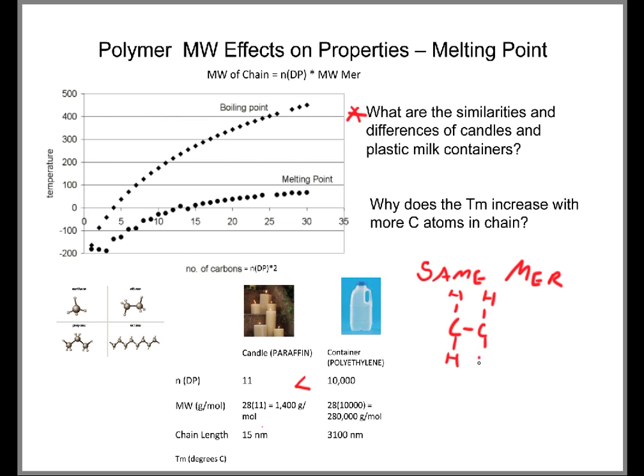They have the same mer. Their degree of polymerization is different. Also notice that their molecular weight for the entire chains is less for the candle than for the container. The chain length for the candle made of paraffin is less than the container made of polyethylene. Looking at the trends in this table, we can predict that the melting temperature would also be less for the candle than for the polyethylene.